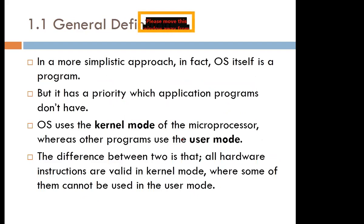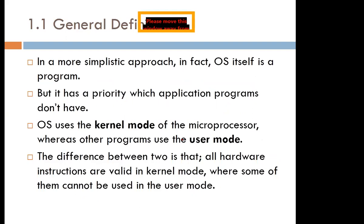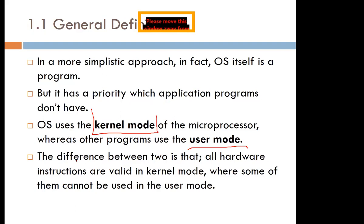The operating system is a program, but it has priority over other programs. This means it has the ability to operate in a kernel mode — when it deals with the microprocessor — and also in user mode, when it is taking care of the needs of the user.